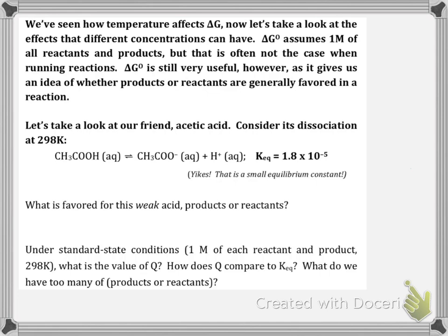Let's talk about the difference between delta G and delta G standard. For standard conditions, we need 1 molar concentrations for everything and we run the reaction at 298 kelvin. Here we have the dissociation of acetic acid, which has a really small Keq, much less than 1. Since Keq relates to products over reactants, a small Keq means a large denominator — so reactants are favored.